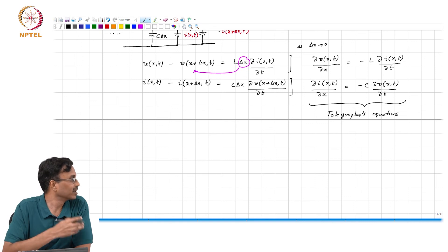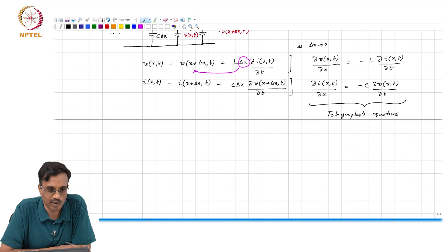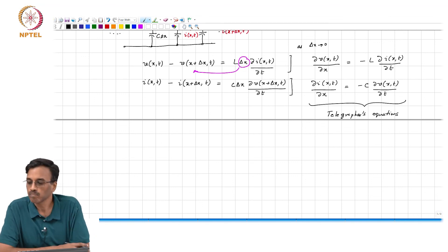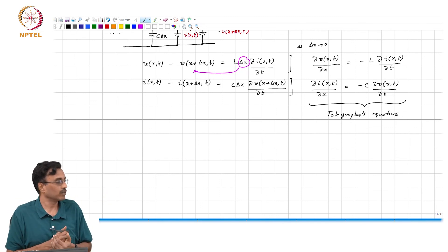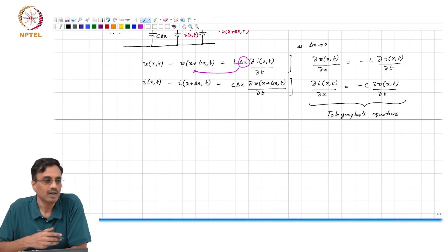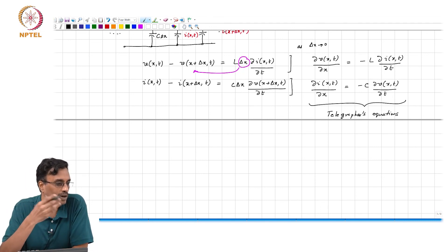As you can imagine, all these kinds of analysis became important in the early days of telegraphy, where you were sending Morse code and you wanted to analyze how far it will go and what happens. So you have two - you need to find v and i, and therefore you have two coupled first-order partial differential equations. To find one or the other, you basically eliminate the other variable.